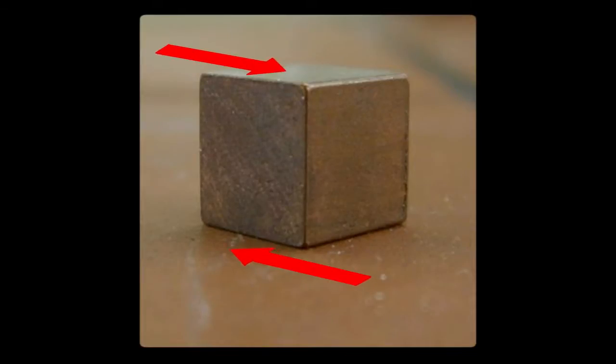Shear stress is a stress which is applied along the surface of a material. When applied to a square, it causes it to take on the shape of a rhombus.